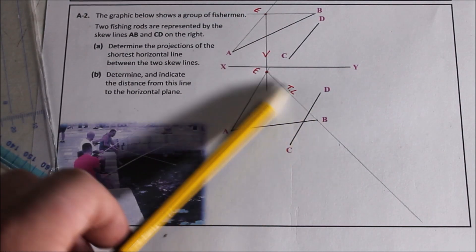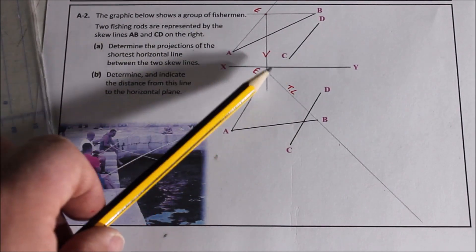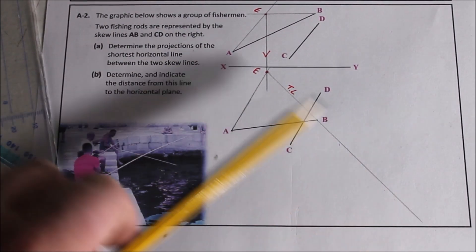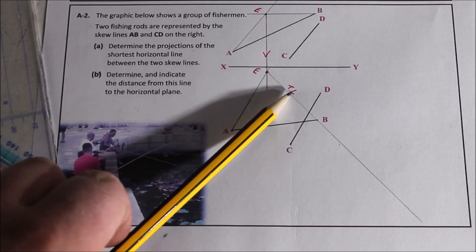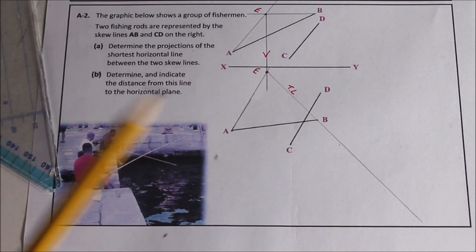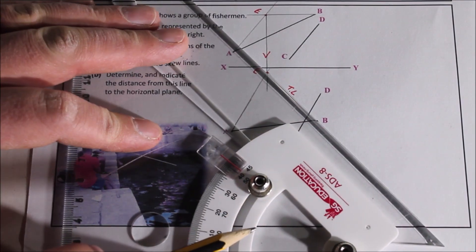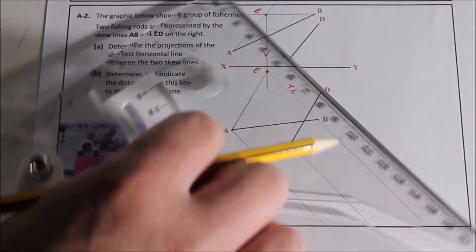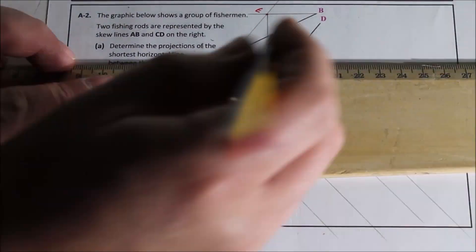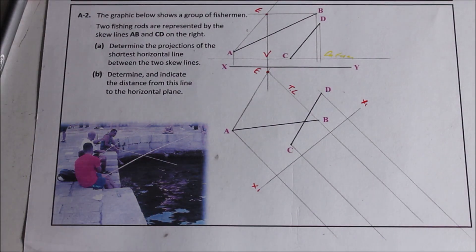If I join it back to B, the line EB here in plan is a true length. And now if we project our skew lines down to an auxiliary elevation of the four points, using that angle, we'll see them parallel and we can move on to find the shortest distance.